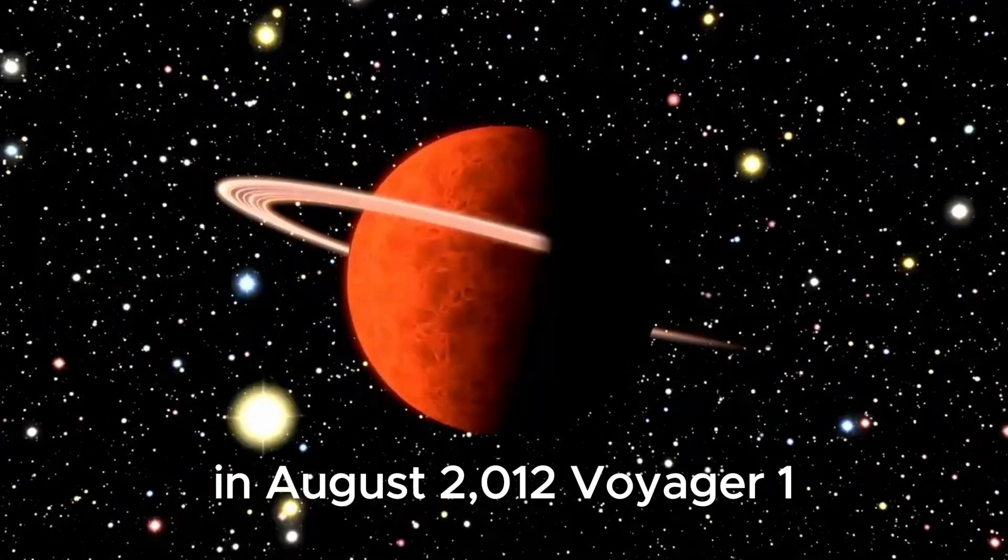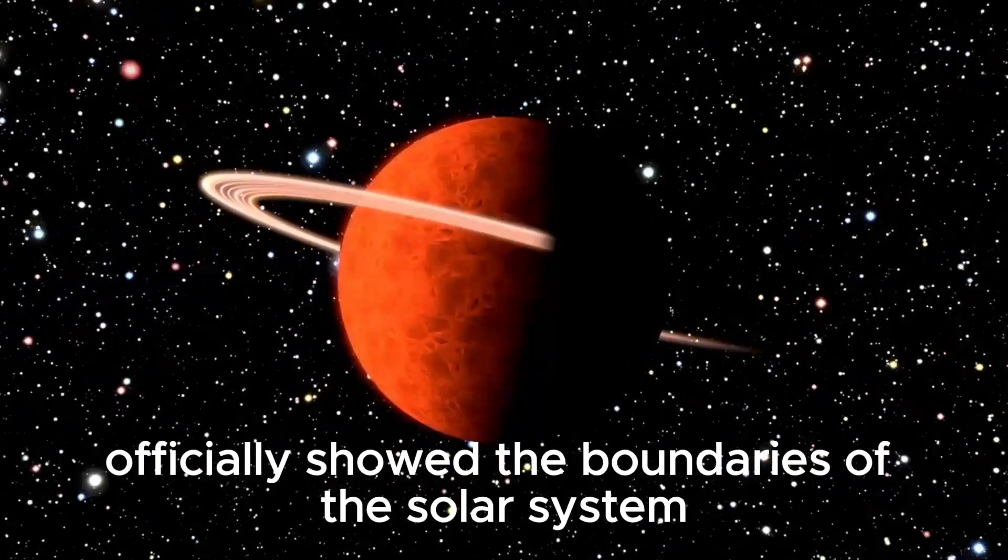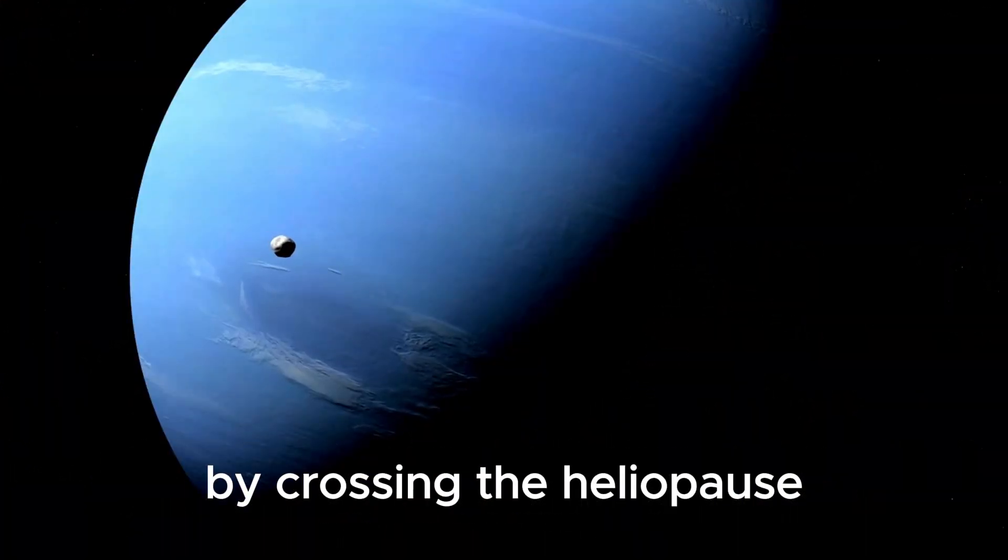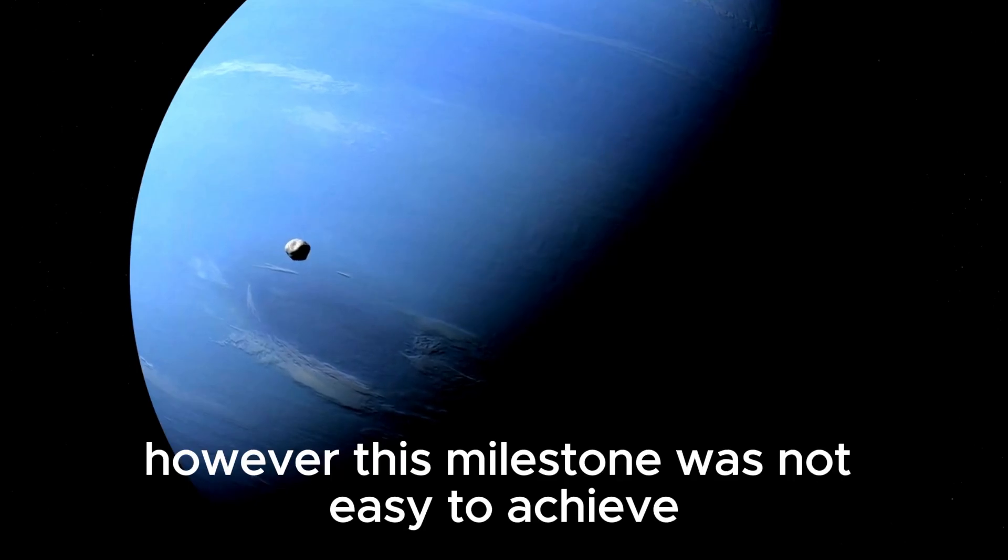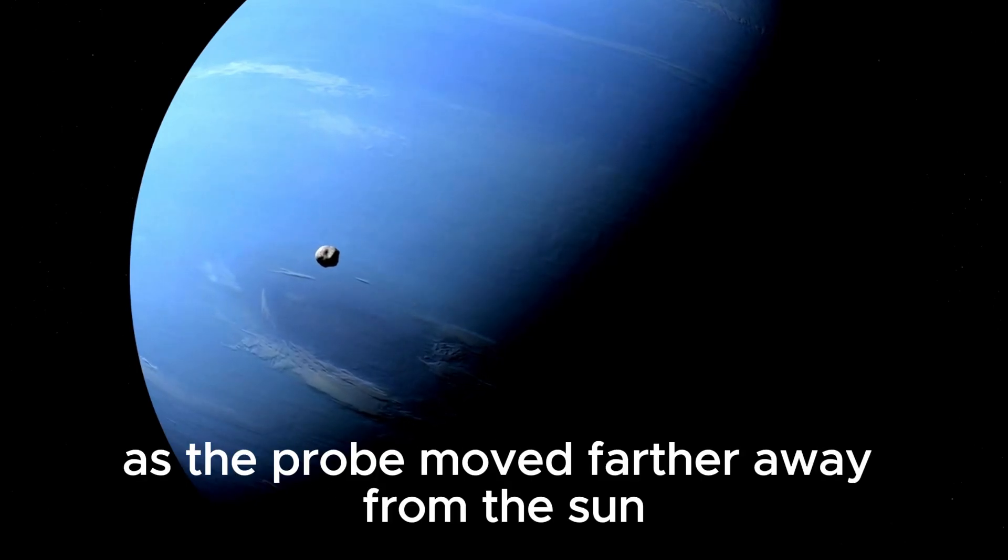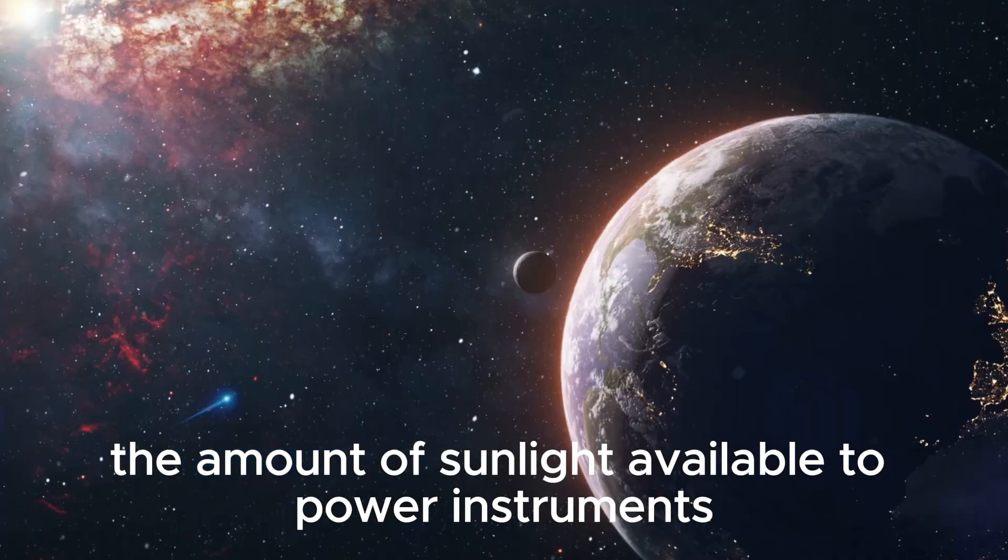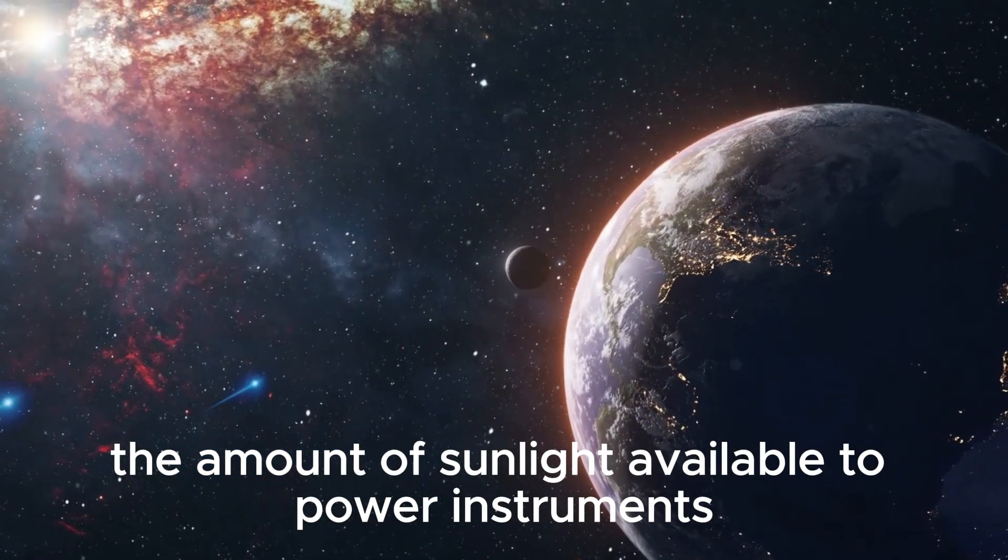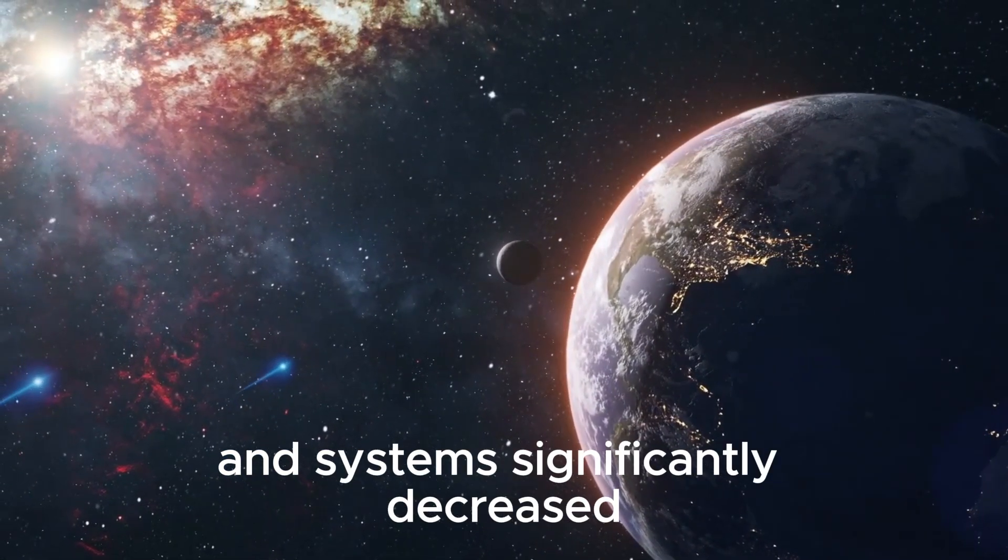In August 2012, Voyager 1 officially showed the boundaries of the solar system by crossing the heliopause. However, this milestone was not easy to achieve. As the probe moved farther away from the sun, the amount of sunlight available to power instruments and systems significantly decreased.